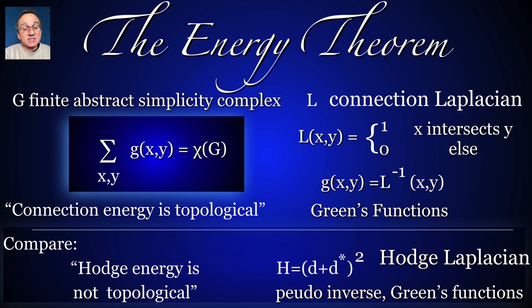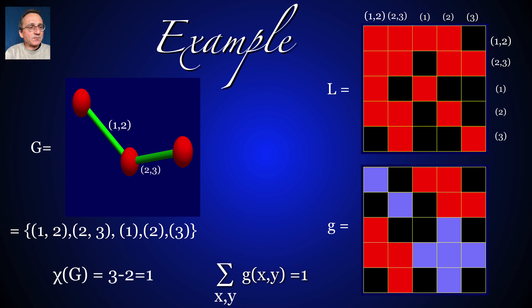On the other hand, the Hodge-Laplacian is the same size, it lives in the same Hilbert space but is never invertible. Here's an example. The complex with 5 elements and Euler characteristic 1, the sum of the matrix elements of g is also 1. In this one-dimensional case we can form L-g, which agrees with the signless Hodge-Laplacian. We come to this in a second.